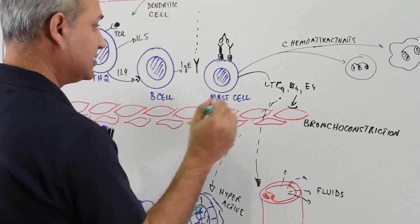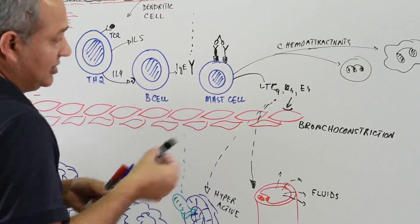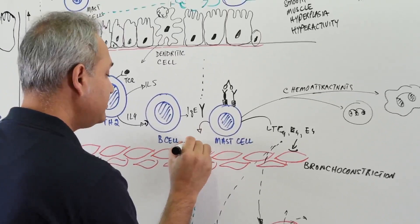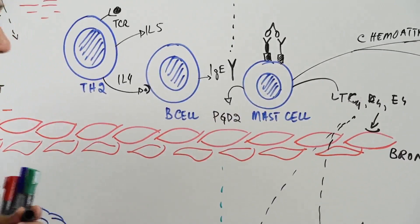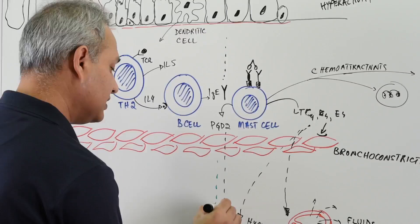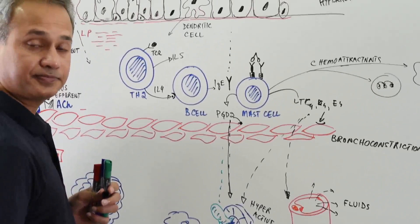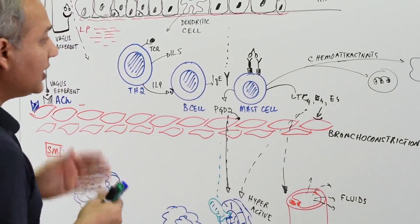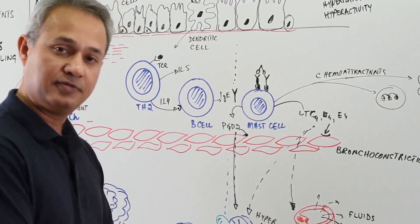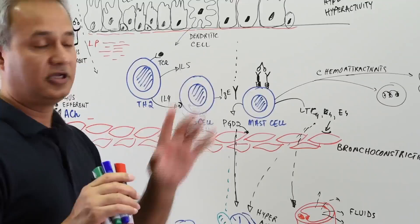The cyclooxygenase pathway is also activated via the arachidonic acid pathway, producing prostaglandins. PGD2 — prostaglandin D2 — is especially important. It has effects on the glands and muscle similar to leukotrienes: bronchoconstriction and increased mucus secretion. Neutrophils are also called in and release inflammatory chemical substances, adding to the inflammation. This is the immediate reaction to the allergen.